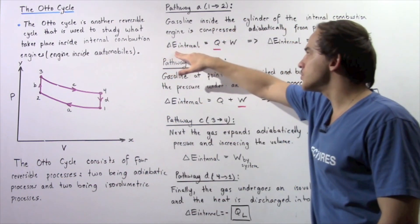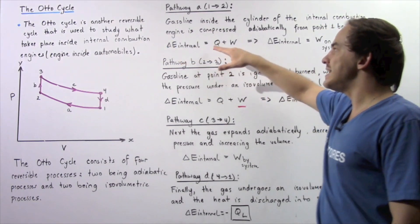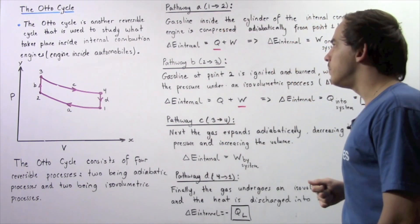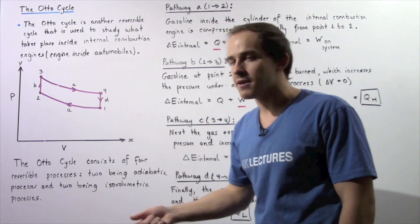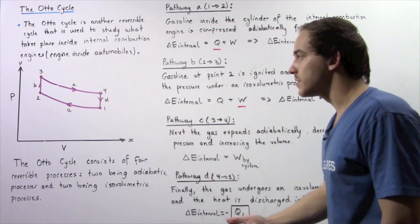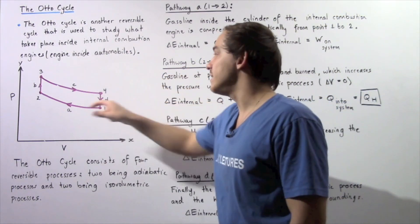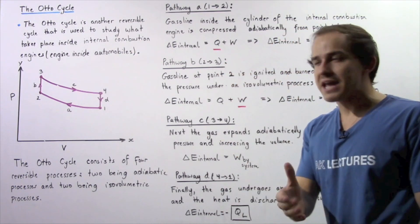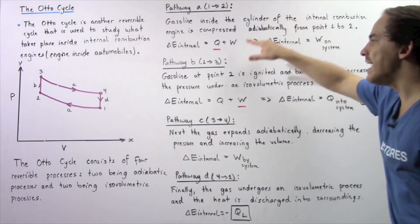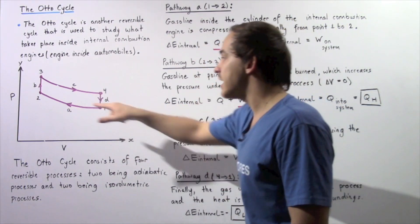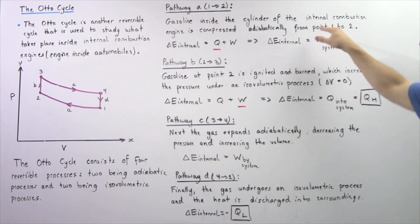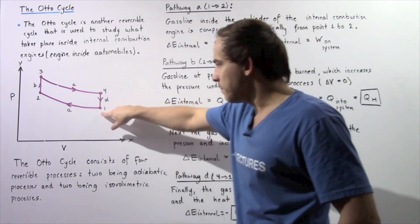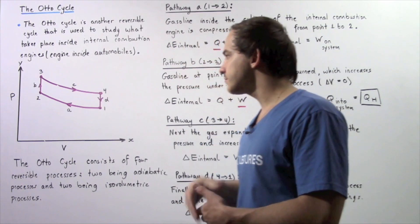Recall, according to the first law of thermodynamics, the change in internal energy of our system is equal to Q plus W, where Q is the heat flow into our system and W is the work done by our system. Because in pathway A we're dealing with an adiabatic compression, Q is zero. This implies the change in internal energy during pathway A is equal to the work done by the surroundings on our system to compress it from position one to position two.